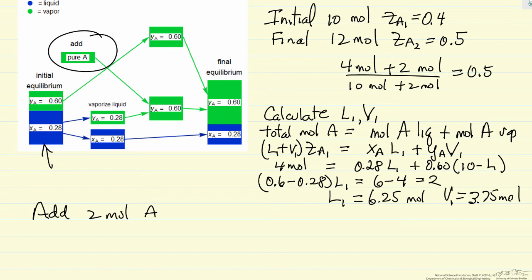Then we evaporate the corresponding amount of liquid such that we mix them together, we end up with the correct mole fraction. YA is still going to be 0.60, XA is still going to be 0.28, but we have different amounts of liquid and vapor, L2 and V2.